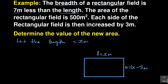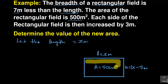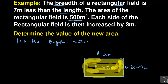The next statement says the area of the rectangular field is 500 square meters. We place our area — 500 square meters — in the center of the rectangle, referring to the shaded region inside. So the area equals 500 square meters.